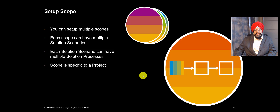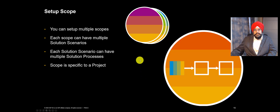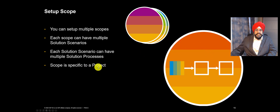The last step in a project setup is scope. Scope is something you can consider as a group of processes that are managed for a common purpose. Scope consists of solution scenarios and each solution scenario can have different solution processes. One thing you need to understand is scope is specific to a project, and the assumption is the project is complete when the assigned scope is delivered.